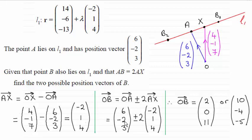So putting those vectors in, if you do plus 2 times this vector and add it to this vector here you find you get (2, 0, 11). And if you do the minus 2 option, (6, -2, 3) minus twice this vector gives you (10, -4, -5). That's basically how you go about that question.